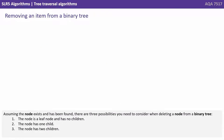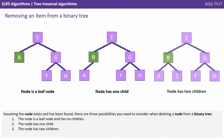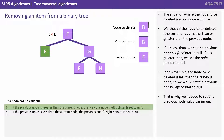Assuming the node exists and has been found, there are three possibilities to consider when deleting a node from a binary tree: one, the node is a leaf node and has no children; two, the node has one child; or three, the node has two children. The situation where the node to be deleted is a leaf node is simple. We check if the node to be deleted is less than or greater than the previous node. If it's less than, we set the previous node's left pointer to null; if it's greater than, we set the right pointer to null. In this example, the node to be deleted is less than the previous node, so we set the previous node's left pointer to null. That is why we needed to set the previous node value earlier on.